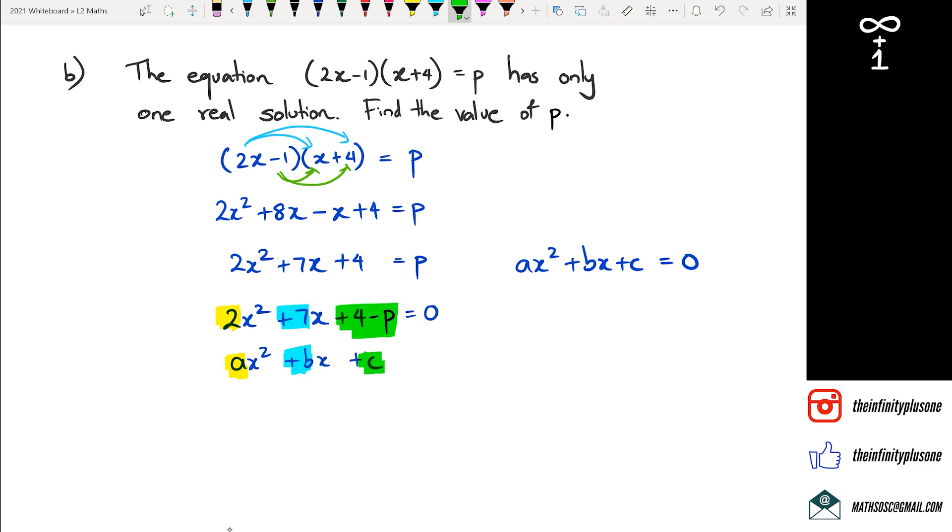So that's what we have. Now the other thing that we kind of should have done at the start is when we had a look at this part right here, this has only one real solution. Because it's only one real solution, we know that we needed to write down b squared minus 4ac. The discriminant had to equal to 0. So that's what we're going to do down here. So we're going to put b squared minus 4ac is equal to 0.